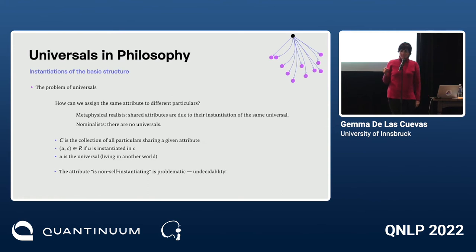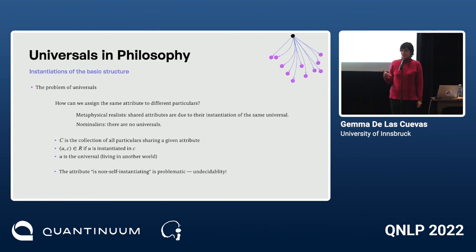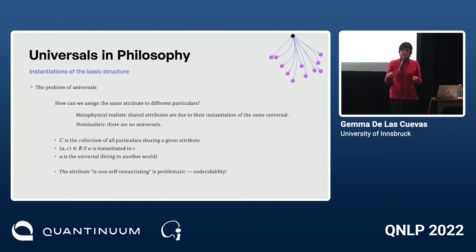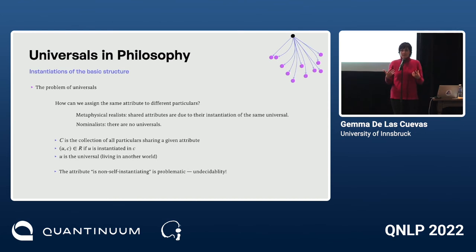What's more interesting is that if you consider the attribute of being non-self-instantiating, then it is non-self-instantiating if and only if it is not. This is precisely the core argument of undecidability. In many of the examples I have in mind, there is a fundamental tension between universality and undecidability — and quite unexpectedly, this also appears here.